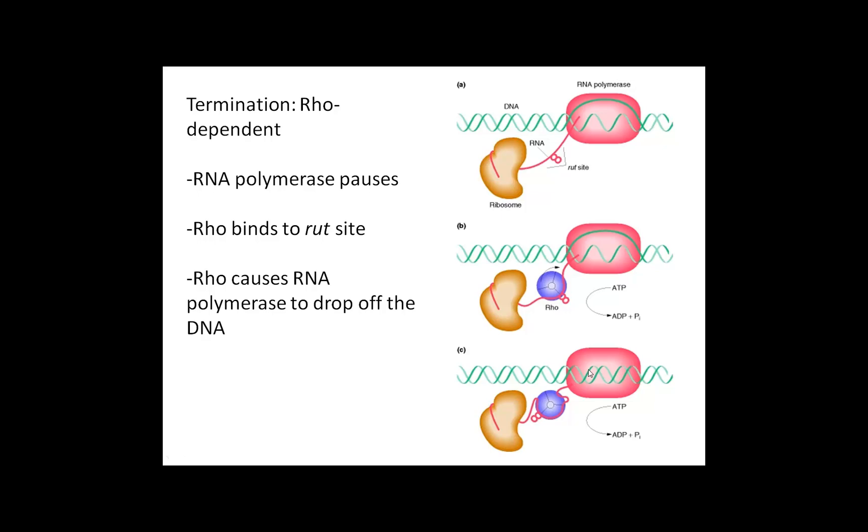The RNA is free, and on this particular figure it shows that it's already starting to be translated. The RNA polymerase falls off, and the DNA-DNA hybrid reforms.